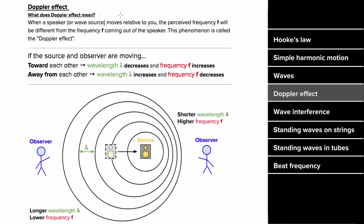The Doppler effect refers to the change in the perceived frequency when a wave source moves relative to the observer. If a wave source and observer are moving toward each other, the wavelength decreases according to that observer, which makes the perceived frequency increase. This happens because as the speaker emits wave pulses, it moves toward the pulse it just emitted, so on the leading edge, the crests of the wave are closer together.